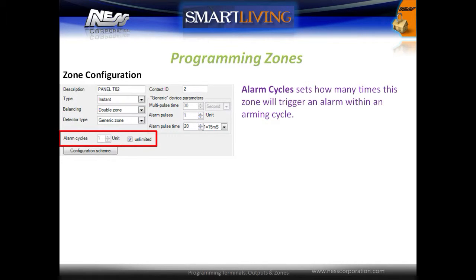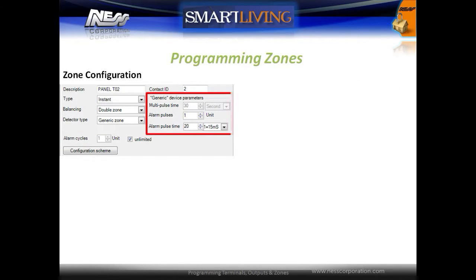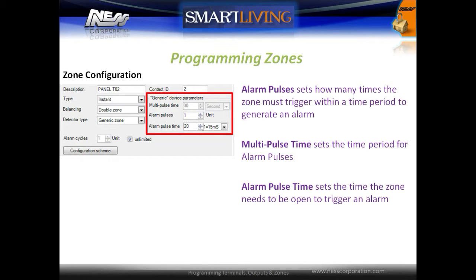Alarm Cycle sets how many times this zone will trigger an alarm within an arming cycle. Alarm Pulses sets how many times the zone must trigger within a time period to generate an alarm. The multi-pulse time sets the time period for the alarm pulses.